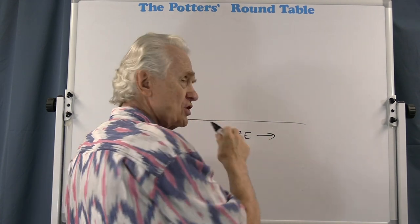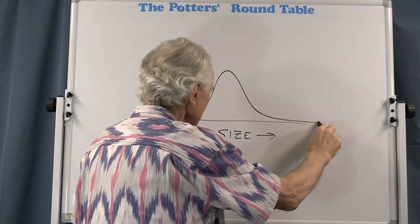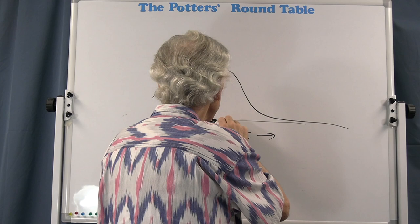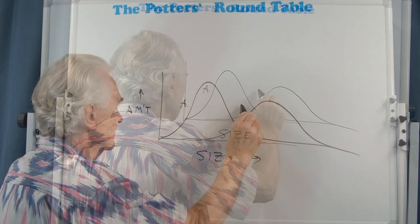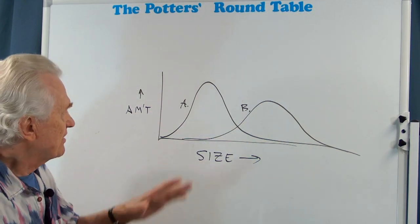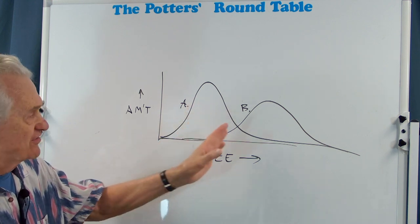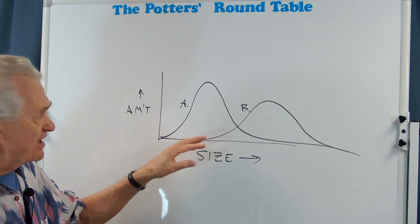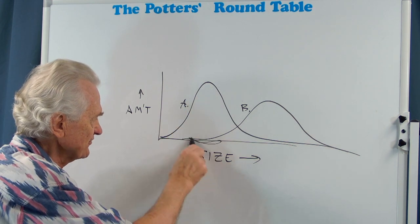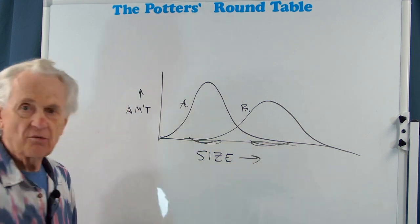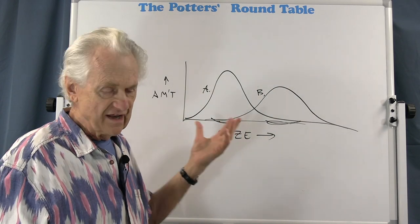So I can have one, one curve or one distribution for one material might look like this. And another one might look like this. And what this shows is that material A contains a lot more of the smaller particle sizes than material B. They both have a range of sizes, but most of material A is around this size, this sort of size in here, and most of B is in this size in here. So B is generally a lot coarser material or a coarser blend than A.